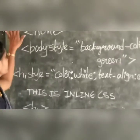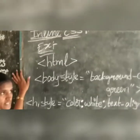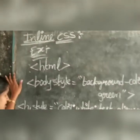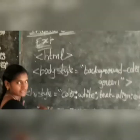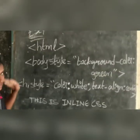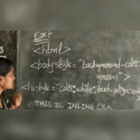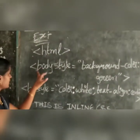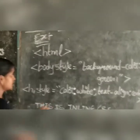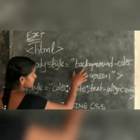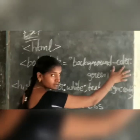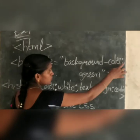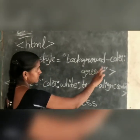Here is an example of inline CSS. All style attributes are taken in one line — the selector line. We take the HTML tag, then the body tag with the style attribute: background-color colon green, written in apostrophes.